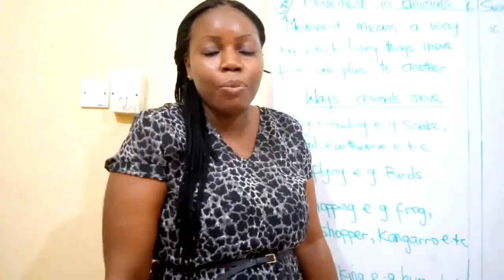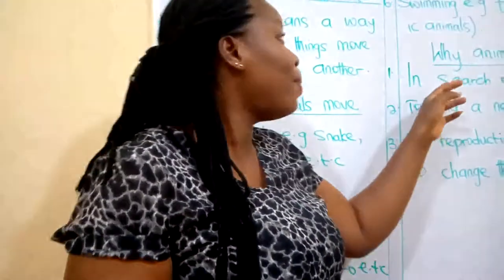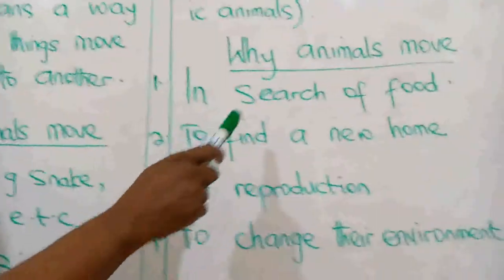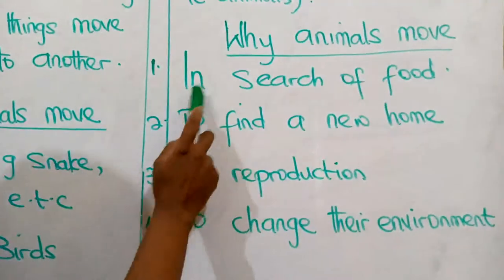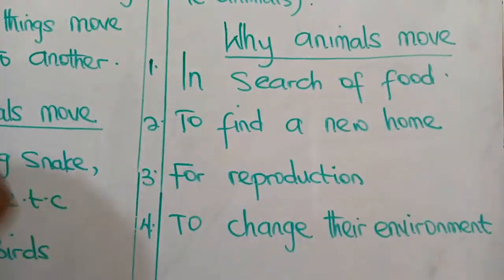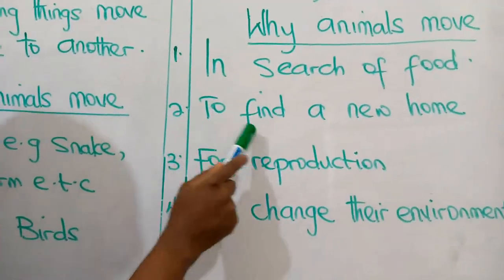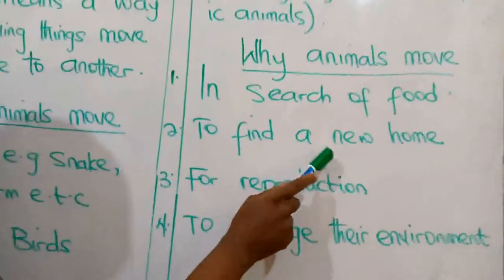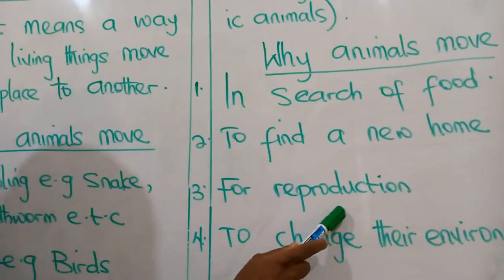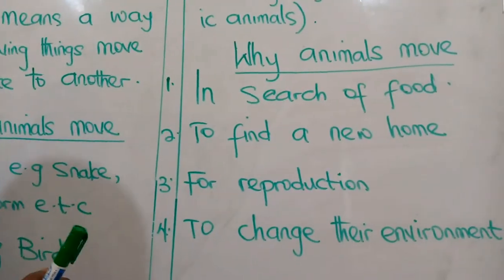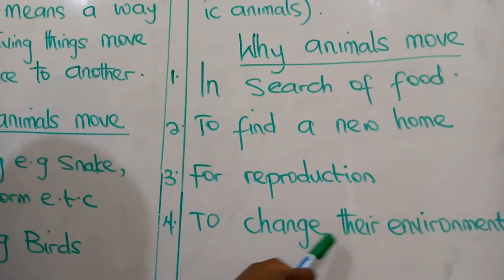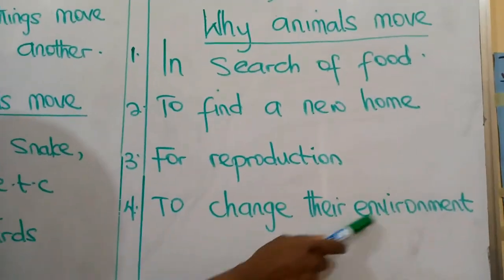Now we are going to look at why animals move. Why do they move from one place to another? Why is it that animals are not like trees, staying in one place? Number one: in search of food. They move to search for food — if they stay in one place they will not have food to eat. Number two: to find a new home. Number three: for reproduction — they move to find their kind to reproduce with. Number four: to change their environment.